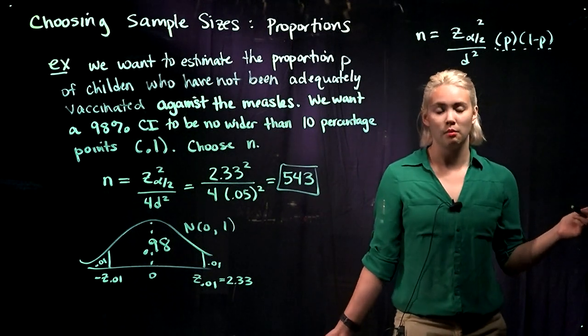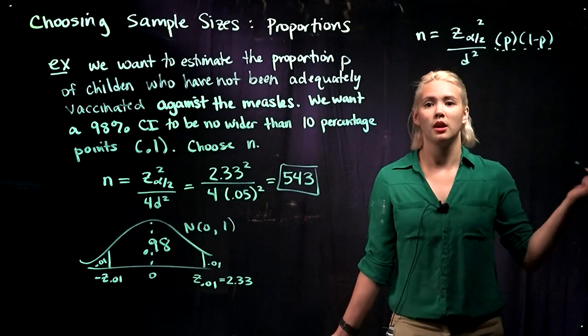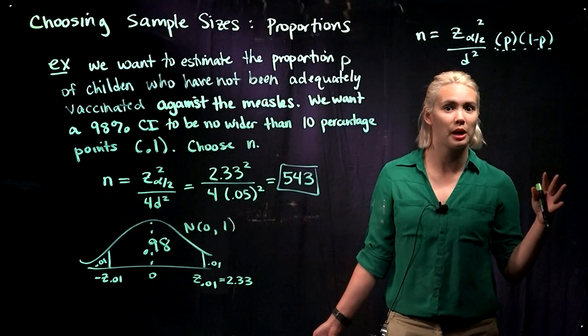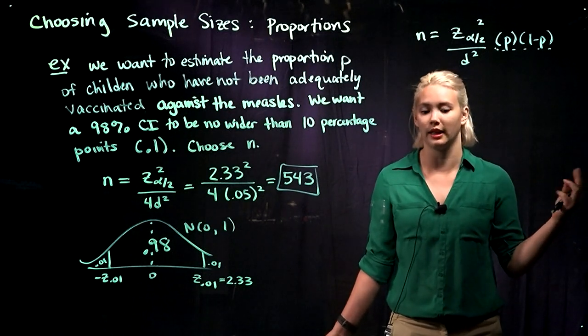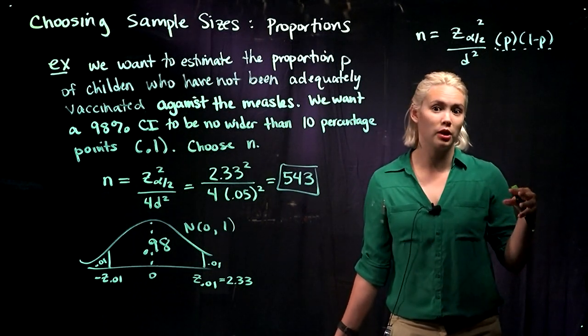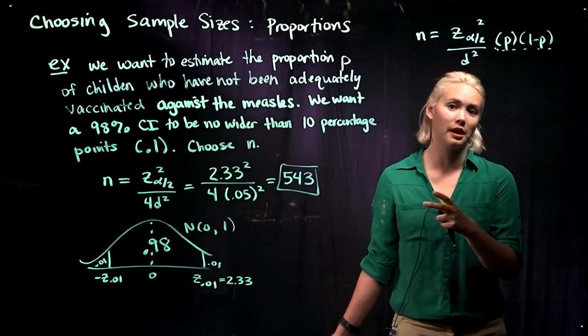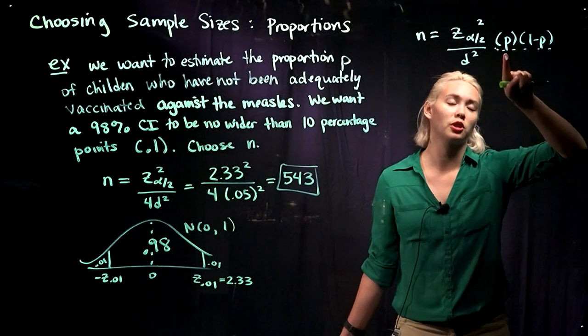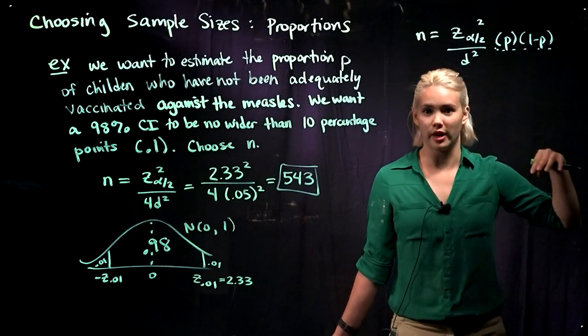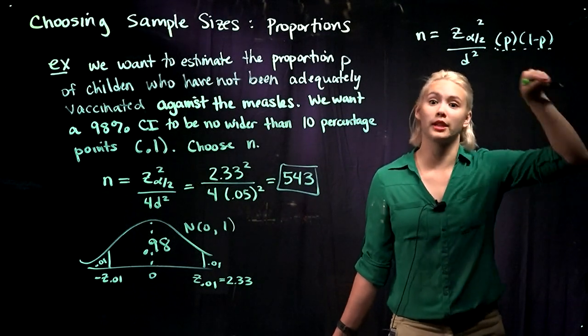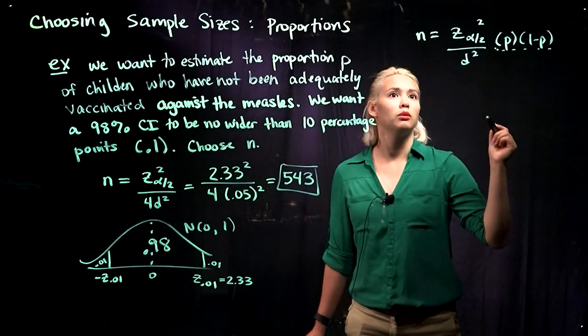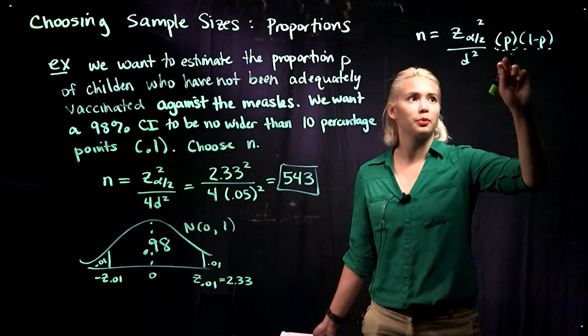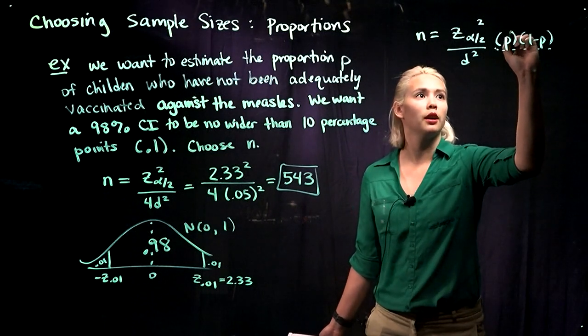Sometimes we have maybe some preliminary results or previous study or maybe a study on a similar population. For example, if we're looking at children in Ramsey County and a study has already been performed in Hennepin County, maybe we can use that Hennepin County proportion as a rough guess for our Ramsey County proportion in order to calculate the sample size. If we have a decent guess, then instead of using p equals .5, we can use our decent guess.